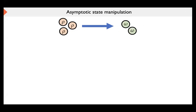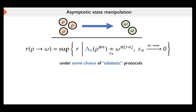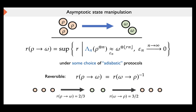When we talk about transformations of quantum states, we generally mean manipulating many copies of quantum states, because that's how we recover macroscopic entropic properties of physical systems. In particular, we study transformation rates: a transformation rate is defined by transforming n copies of a state ρ into rn copies of another state ω, essentially asking how many copies of ω we get per copy of ρ. This transformation can be approximate — we allow some error ε_n — as long as this error goes to zero as n goes to infinity.